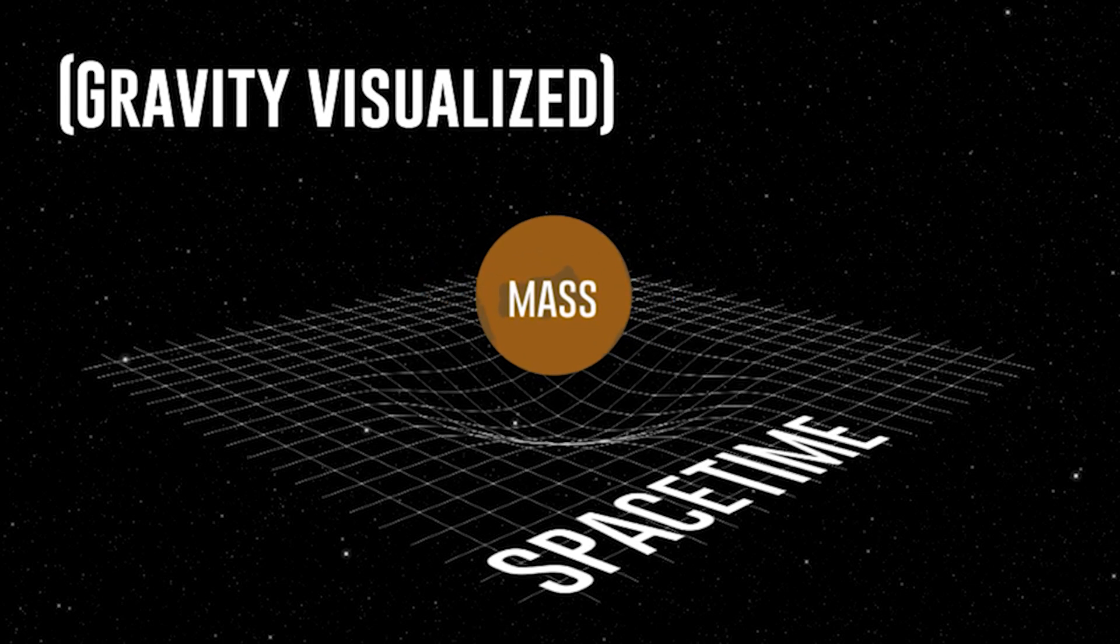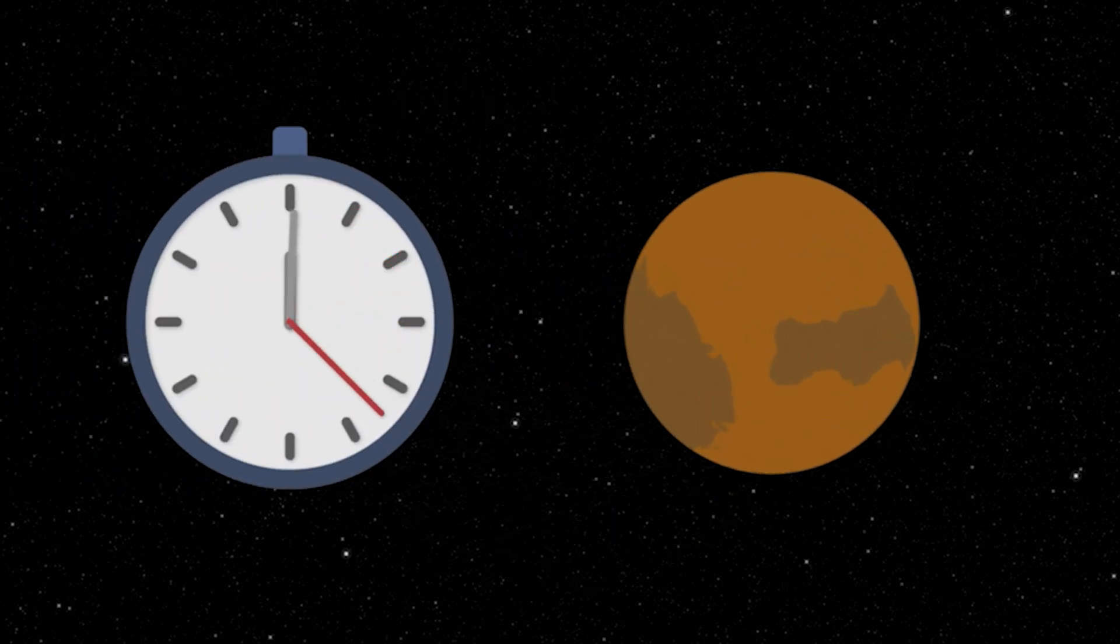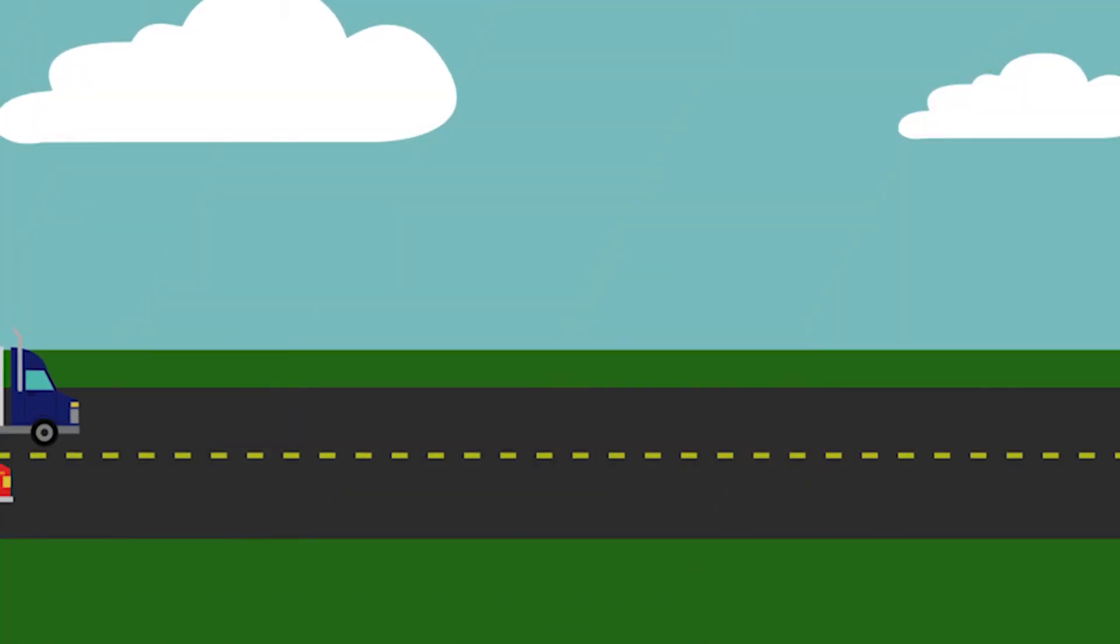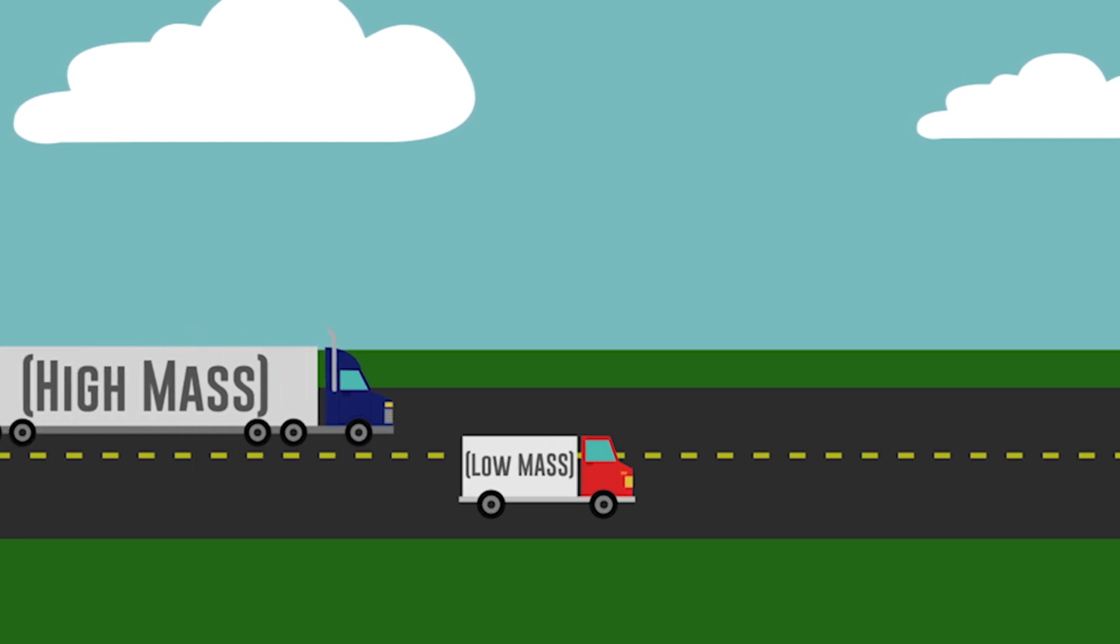But if time and space are fused together in spacetime, then gravity must deform both space and time. Simply put, mass slows down time, so the more mass there is in an area, the slower time will move there. Kind of like how an empty truck can accelerate more quickly than a full truck, since the heavy truck's mass drags on its acceleration.